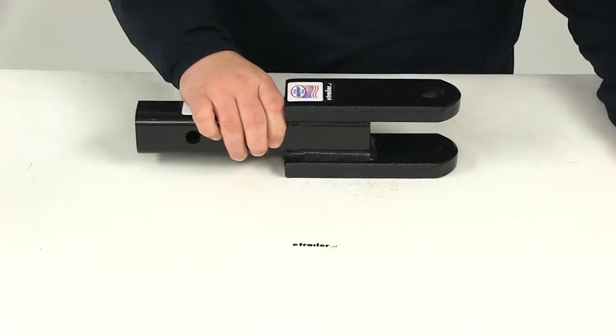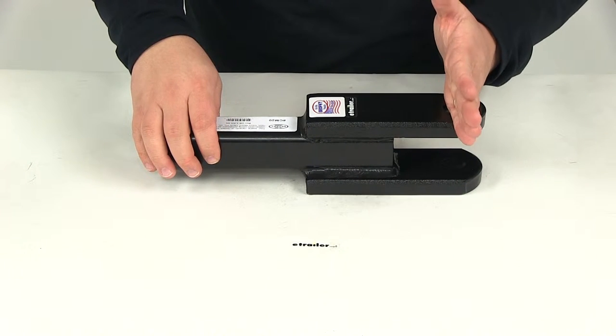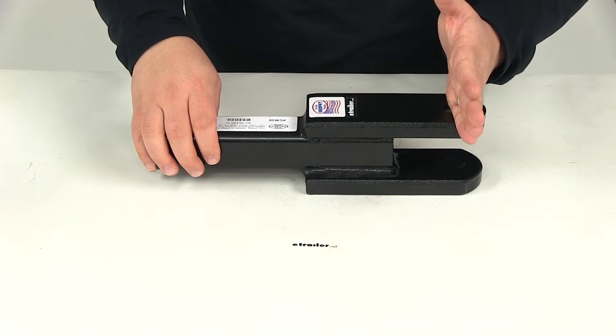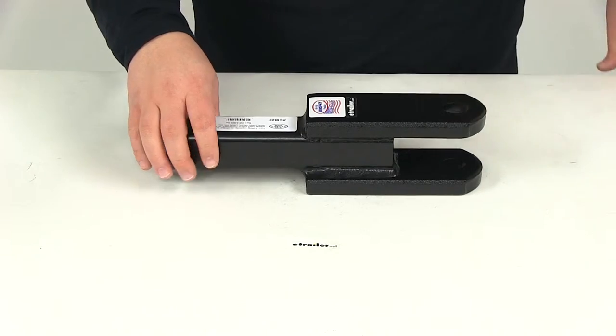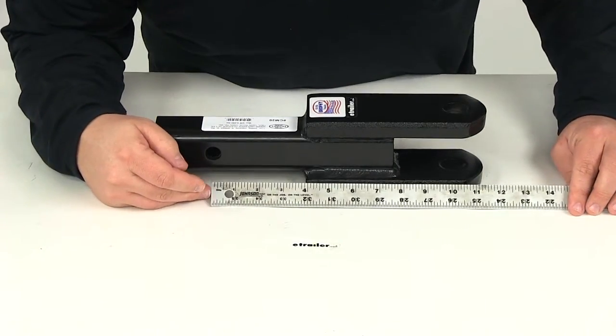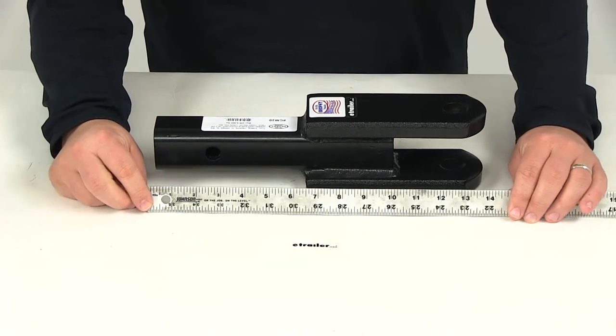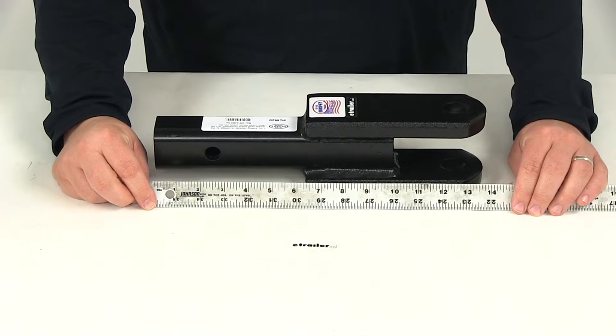The distance from the center of our hitch pinhole, which is going to be this pinhole back here, to the center of that ball or pinhole here on the front that has a one-inch diameter—center on center, the distance between the two—that's going to give us a measurement of ten and one-eighth of an inch. Overall length is going to measure about 14 inches.